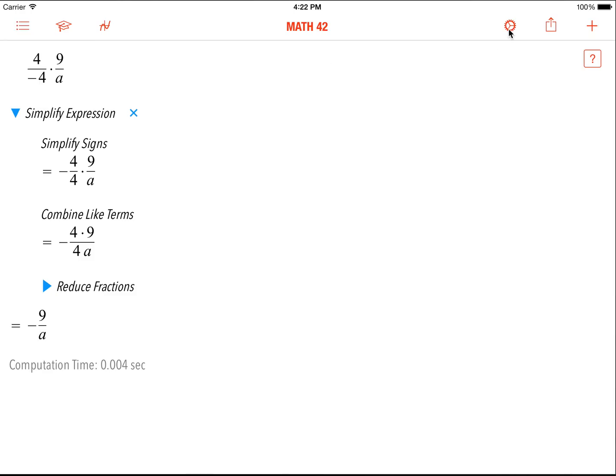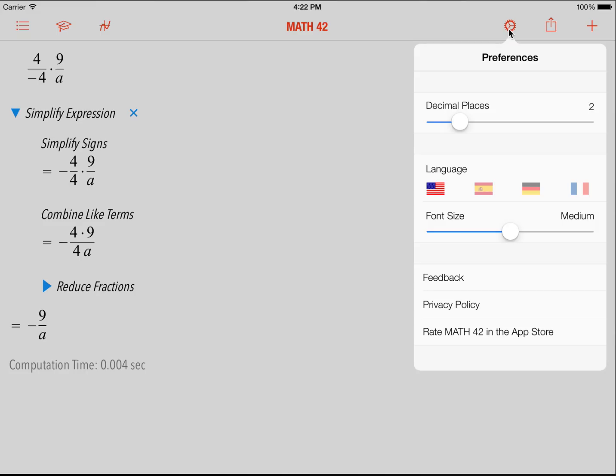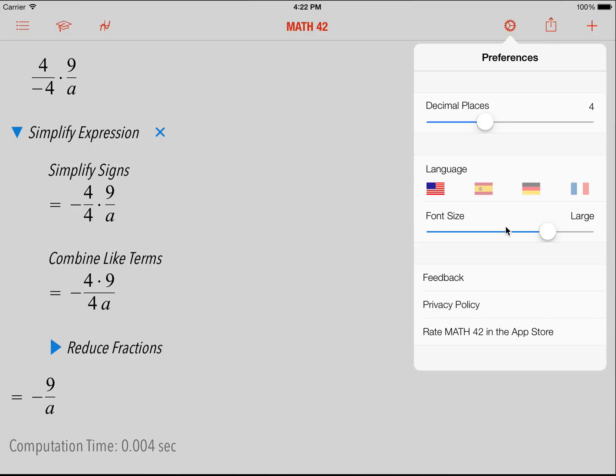What's really important is the next thing. Right now we're available in four languages: English, Spanish, German, and French. Of course, you can change the decimal places. You can change the font size. And that's the whole functionality of Math 42.